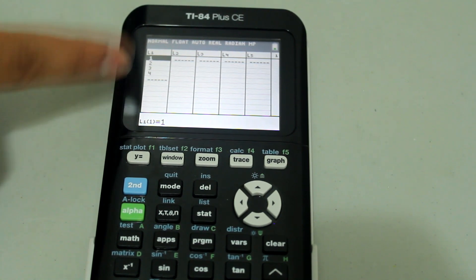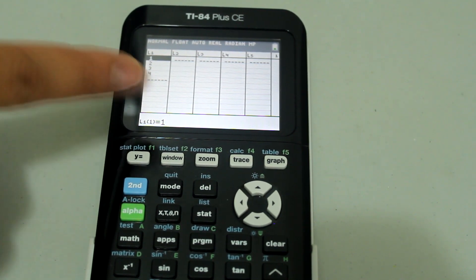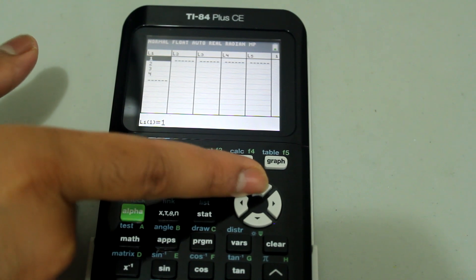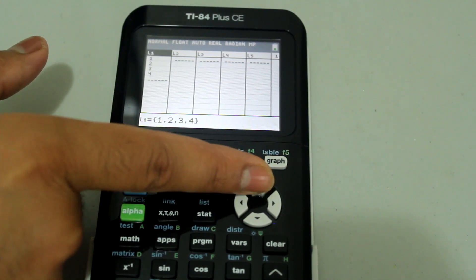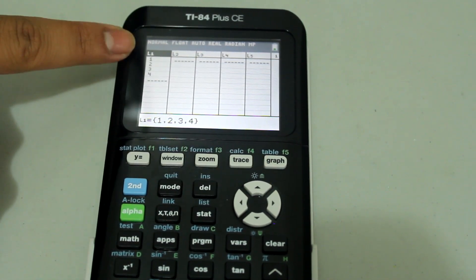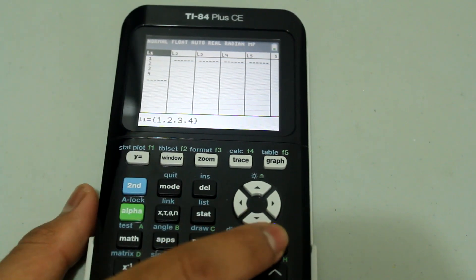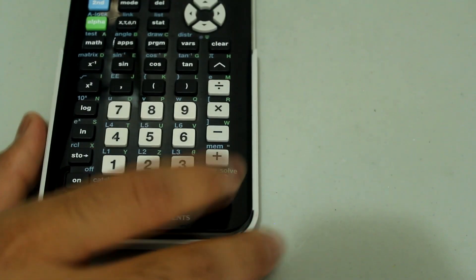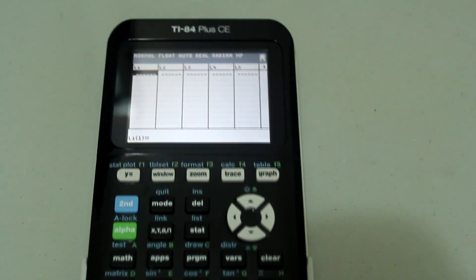If there are existing numbers in the list and if you want to clear that entire list, arrow up to that title of the list and press clear and enter. And the entire list will be cleared.